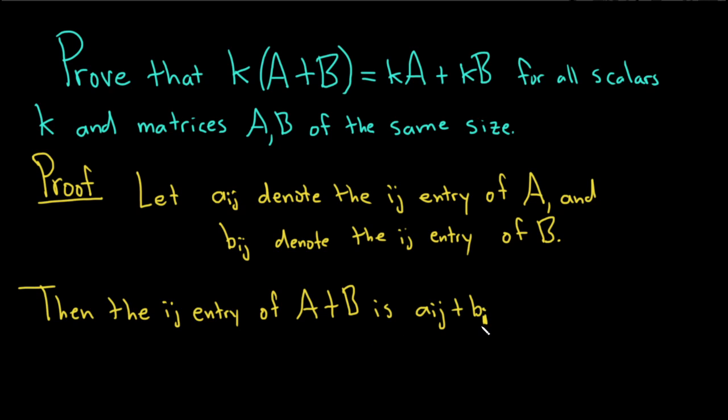Let me clean that up a little bit, make it look a little bit better. So there we go, ij. So then the ij entry of k times A plus B is simply k times aij plus bij.